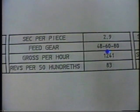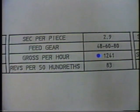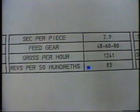The gross production per hour does not reflect overall machine efficiency and therefore is basically a reference number. The column listed as revs per 50 hundredths lists the number of work spindle revolutions during the working cycle, or from 0 to 50 cam hundredths.